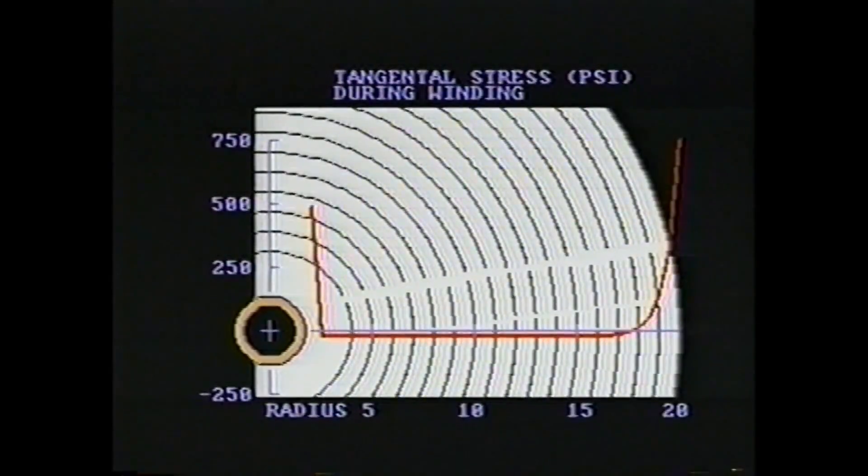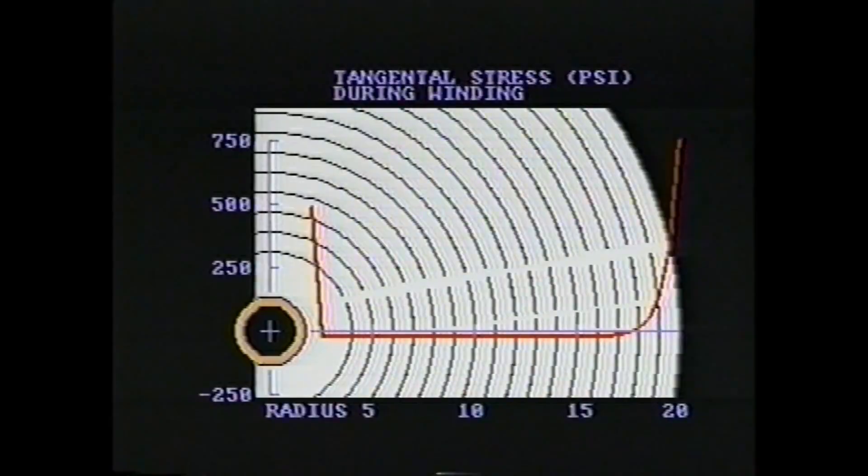Though these last two models show the result of uniform winding, we could also have used them to describe the deleterious effects of non-uniform winding. We would like to have a high radial pressure to reduce paper slippage and an optimum tangential stress to reduce starring and bursts.